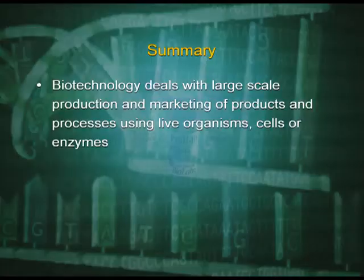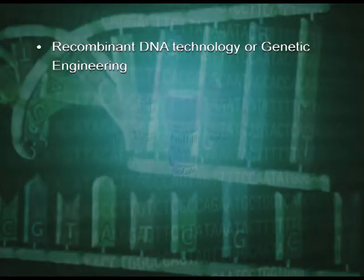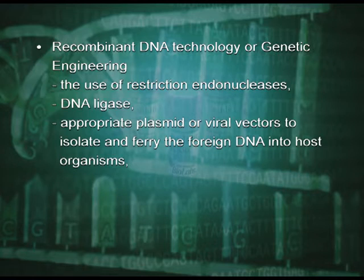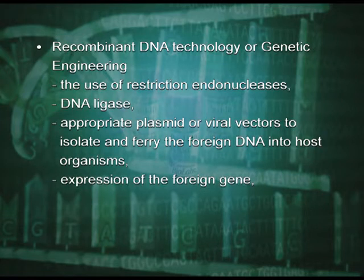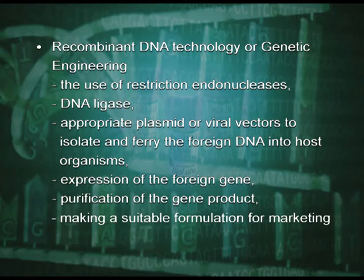Here we have discussed that biotechnology deals with large-scale production and marketing of products and processes using live organisms, cells, or enzymes. We have also studied that modern biotechnology using genetically modified organisms was made possible only when man learnt to alter the chemistry of DNA and construct recombinant DNA. This key process is called recombinant DNA technology or genetic engineering. This process involves the use of restriction endonucleases, DNA ligase, appropriate plasmid or viral vectors to isolate and ferry the foreign DNA into host organisms, expression of the foreign gene, and purification of the gene product — the functional protein — and finally making a suitable formulation for marketing.